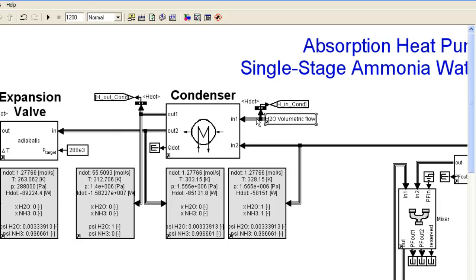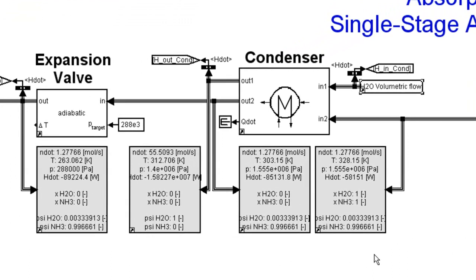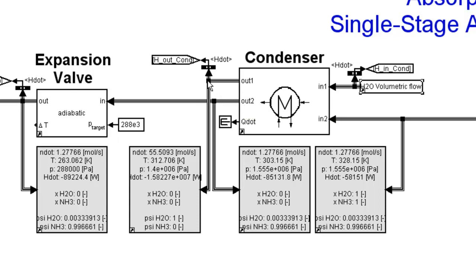To display the information on these buses, we use the so-called flow display — basically a sink or display to show this information in a user-friendly way. Here I've attached a flow display to the incoming ammonia gas to the condenser, another to the outgoing ammonia liquid from the condenser, and a third to the output of the heated water leaving the condenser. You can see the molar flow, temperature, pressure, enthalpy, vapor fractions, and what the flow consists of.